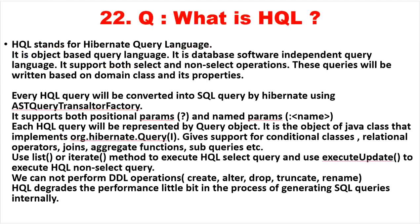The next question: what is HQL? HQL stands for Hibernate Query Language. It is a database-software-independent, object-based query language. It supports both select and non-select operations — fetching or inserting data into the database. Queries are written based on the domain class and its properties. Every HQL query is converted into an SQL query by Hibernate using the AST Query Translator Factory internally. It also supports both positional and named parameters.